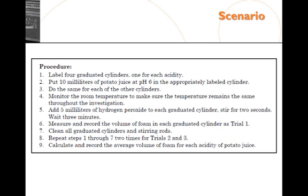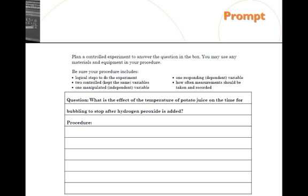Procedure is given. And in this case, the prompt is to provide a new set of procedures for a different manipulated variable. So whereas the previous manipulated variable would be the acidity of the solution, in this case, the question is what is the effect of temperature of the potato juice on the time for bubbling to stop after hydrogen peroxide has been added. You'll see that there are a number of bulleted items that you want to pay attention to as you're answering this question. We'll go over those a little bit later.